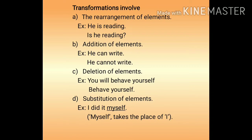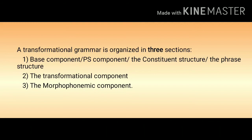A transformational grammar is organized in three sections. The first is the base component, also called the PS component, constituent structure, or phrase structure. The second is the transformational component. The third is the morphophonemic component. Any transformational grammar must have these three components. However, some individual sentences may involve no transformation — that is, the transformational section may be bypassed. For example, 'He is clever' involves no transformation.